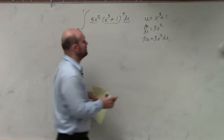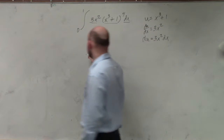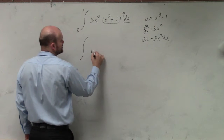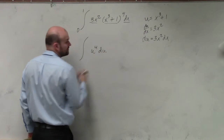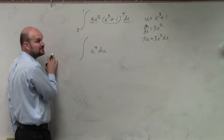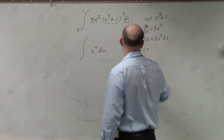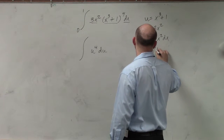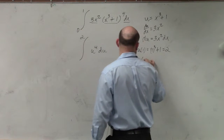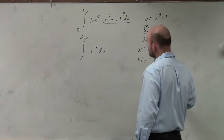The next thing is we want to find our new upper and lower bounds. We can rewrite this as u to the fourth du, but we don't want to use our upper bounds in terms of x — we need to use our upper bounds in terms of u. So u of 1 is 1 cubed plus 1, which is 2. And u of 0 is 0 cubed plus 1, which is 1.